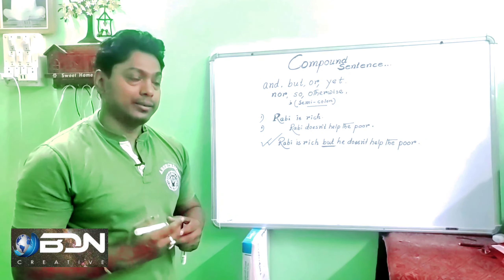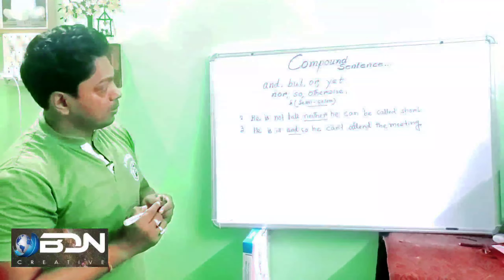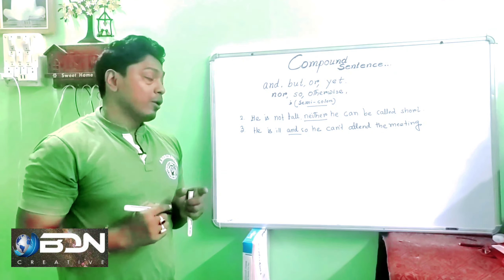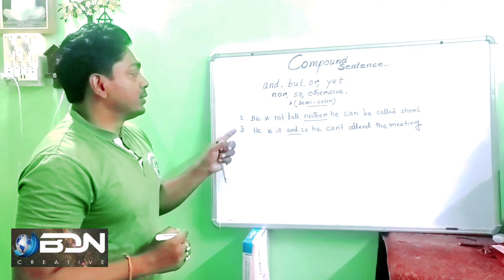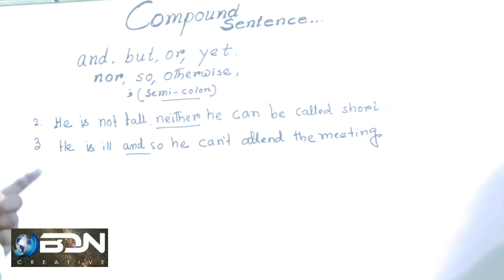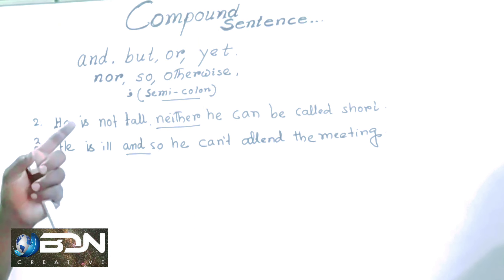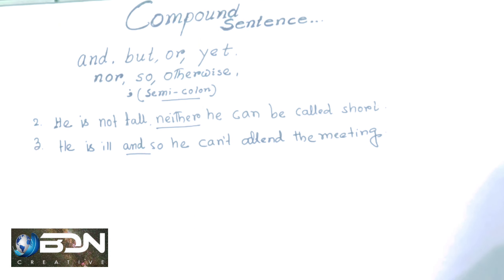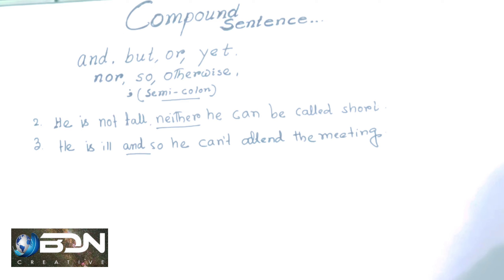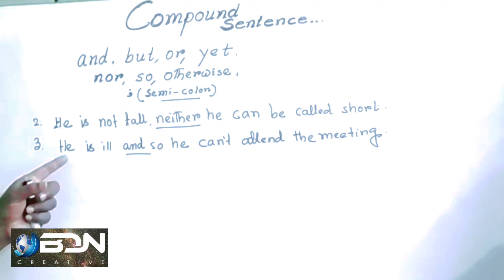Here are more examples. Look at this sentence: he is not tall, neither can he be called short. Another example: he is ill and so he cannot attend the meeting. These illustrate compound sentences using coordinating conjunctions.